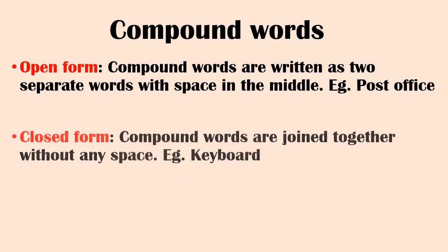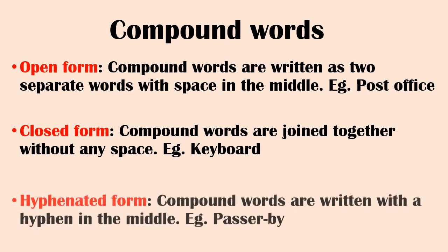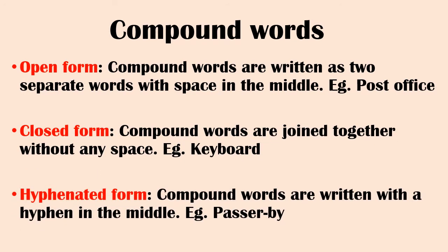Compound words exist in three forms: open form, closed form, and hyphenated form. In open form, compound words are written as two separate words with a space in the middle — example: post office. In closed form, they are joined without any space — example: keyboard. In hyphenated form, they are written with a hyphen in the middle — example: passerby.